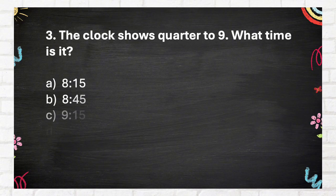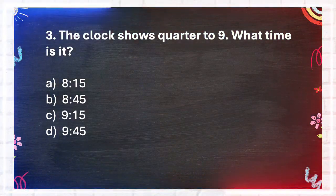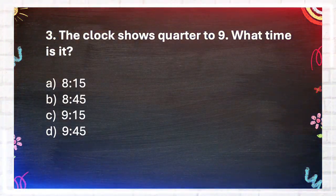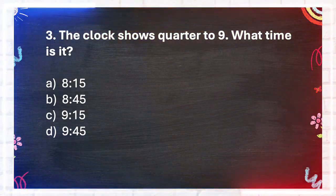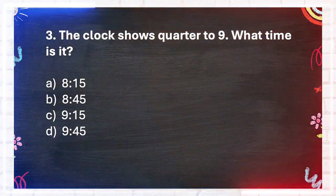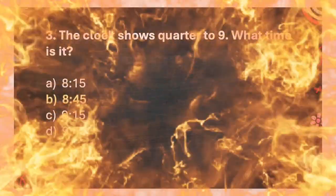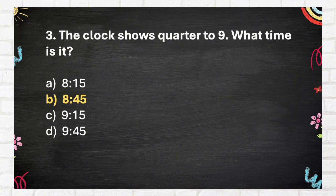Question number 3. The clock shows quarter to 9. What time is it? Again, the clock shows quarter to 9. What time is it? A. 8:15. B. 8:45. C. 9:15. D. 9:45. The answer is B. 8:45.